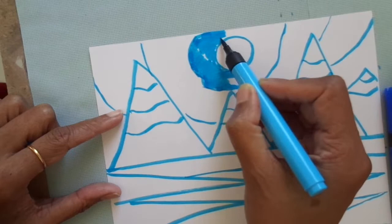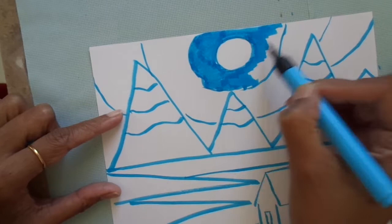Next we are going to color in the sky with shades of blue. We're going to get darker as we move farther away from the middle of the painting, which is the sun.